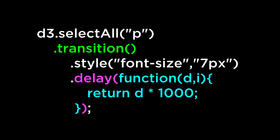This is the third example: instead of using the element index, we use the data attached to the current DOM element to specify the delay. The data attached to the elements were the numbers 5, 4, 3, 2, and 1. So the last element will transition after 1 second, the second to last after 2 seconds, and so on until the first element transitions after 5 seconds.